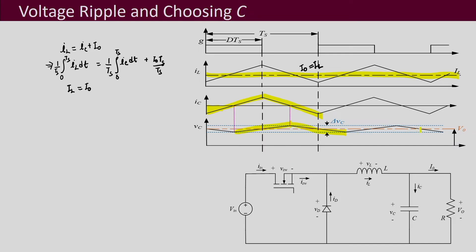While the capacitor current is positive, the voltage across the capacitor increases, and when the capacitor current becomes negative, the capacitor voltage decreases — the capacitor discharges. That is what leads to a smaller ripple in the capacitor voltage, denoted by delta V_C. The average of the capacitor voltage is V_O, the output voltage, which is the average of this ripple voltage.